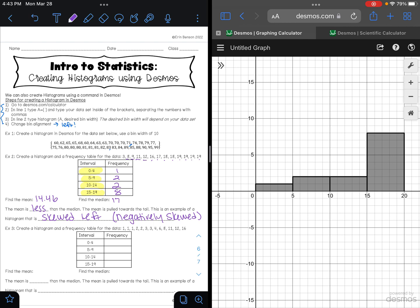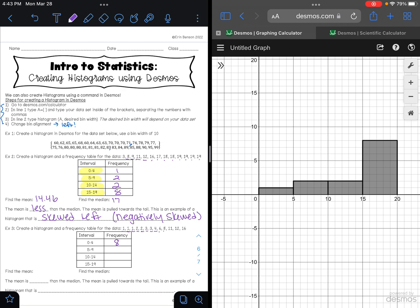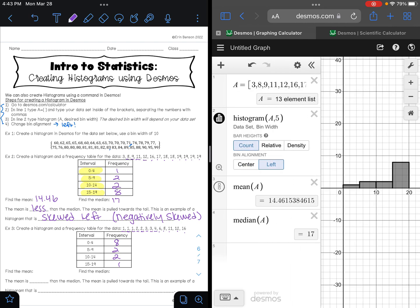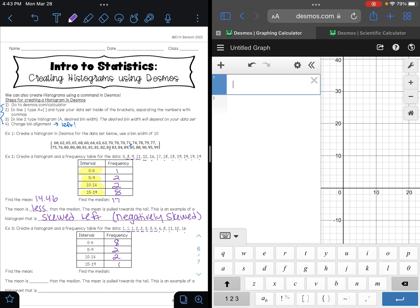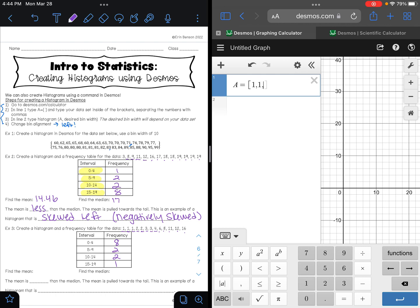Let's try this process again for example three. So on example three we have eight numbers between zero and four, two numbers between five and nine, two numbers between ten and fourteen, and one number between fifteen and nineteen. So over here I'm going to go ahead and type in my list A. So A equals, I'm going to use my brackets, and those numbers were 1, 1, 1, 2, 2, 3, 3, 4, 6, 8, 11, 12, and 16. So I have my thirteen element list.